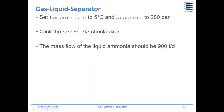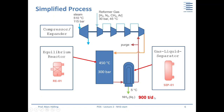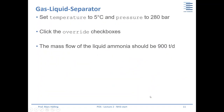After the reaction, separate ammonia from the recycle flow in the gas-liquid separator, setting the temperature to 5 degrees Celsius and the pressure to 280 bars using the override checkboxes. The temperature reduction represents the combined effect of steam production, internal heat exchange, cooling water, and liquid ammonia cooling — all simplified into one step. The target at the end is a liquid ammonia mass flow of 800 tons per day at the outlet of the gas-liquid separator.